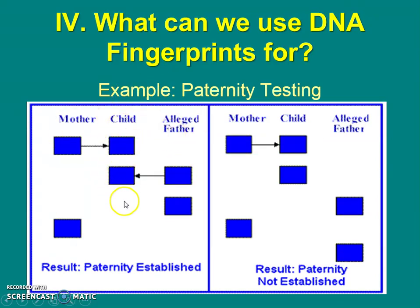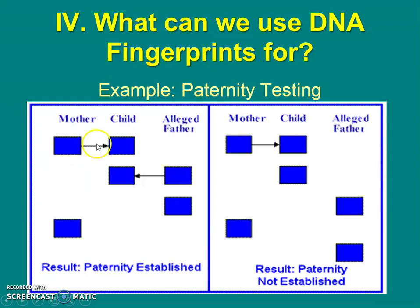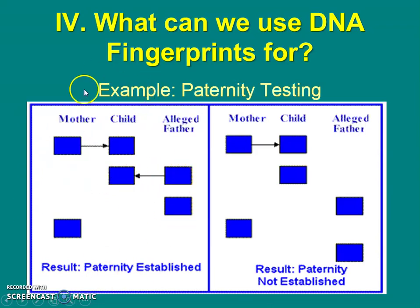Here's the child. We're wondering: is the person to the right the dad? We definitely know this is the mom — the child came from the mom. We can look across horizontally. Does the DNA match from mom to child? Yes — there is one band that matches. And if a dad is the biological dad, he should also have DNA in common horizontally with the child. This one does — they have the same DNA. That suggests the person in this picture to the left is the dad.